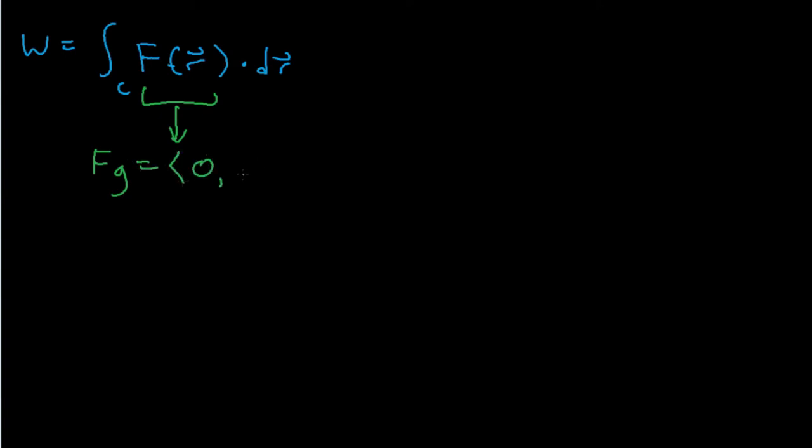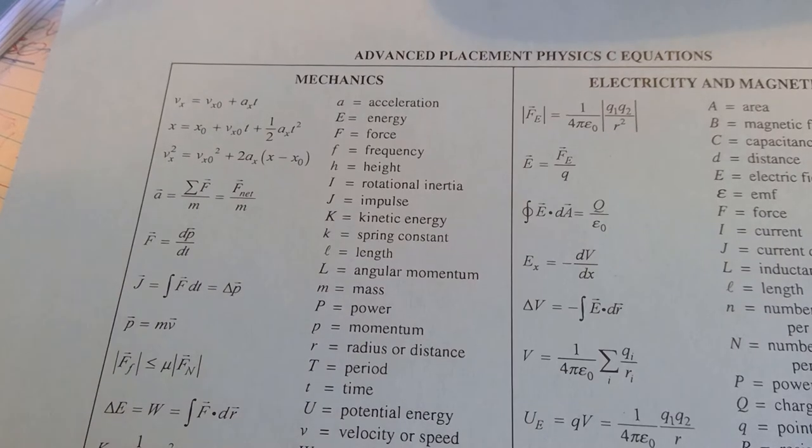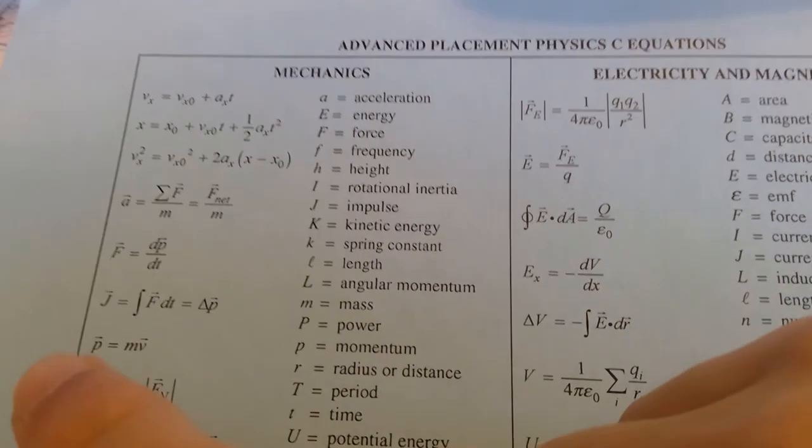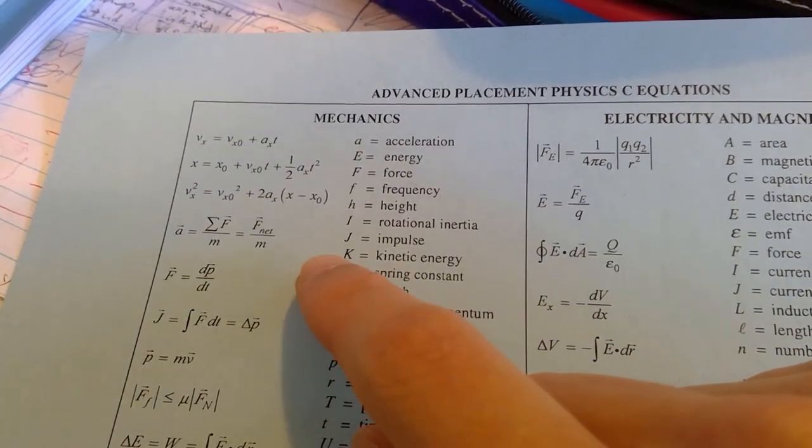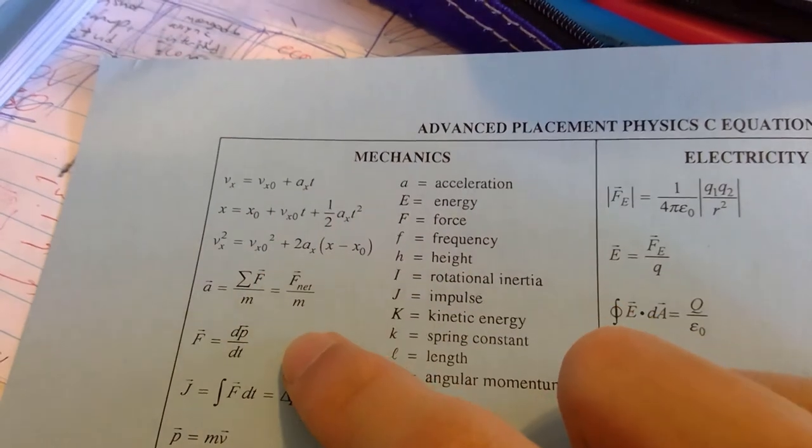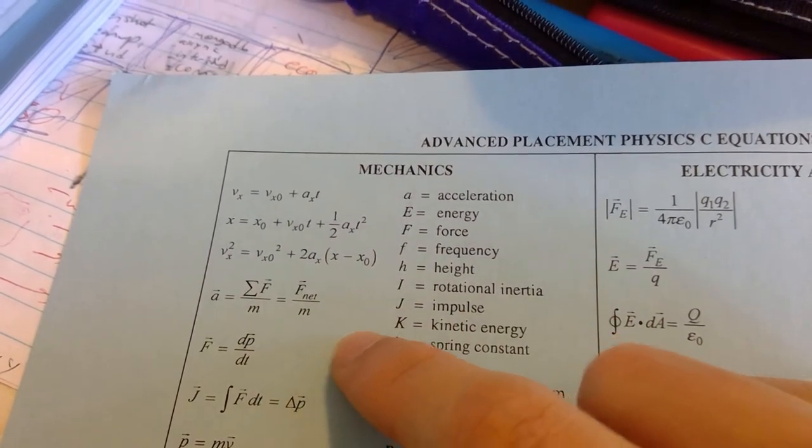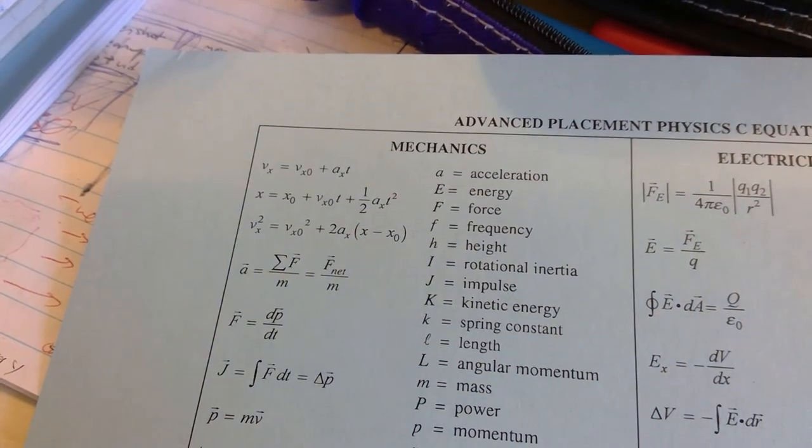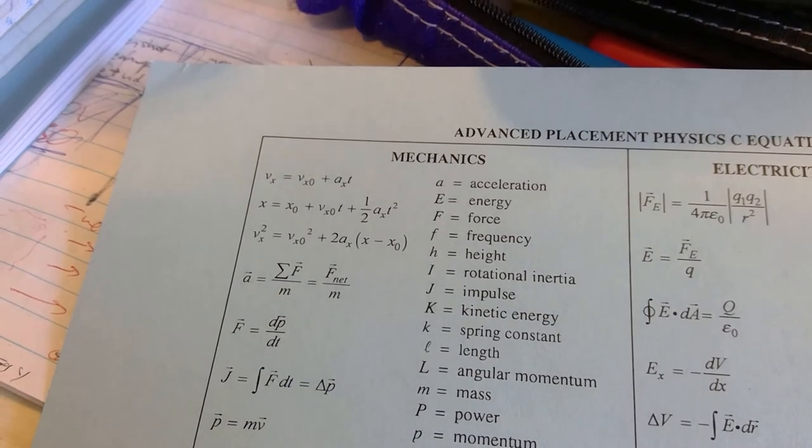The y component is negative. By the way, the reason why the force of gravity is mg is because you have Newton's second law here. You can rearrange it to be F equals ma. And acceleration due to gravity is acceleration, so F equals mg.